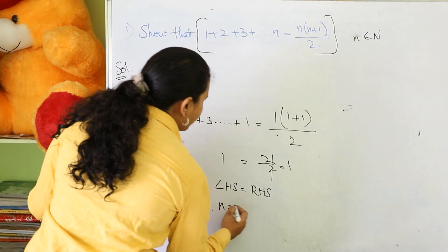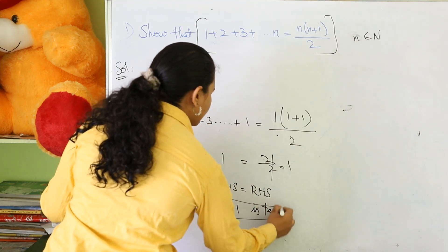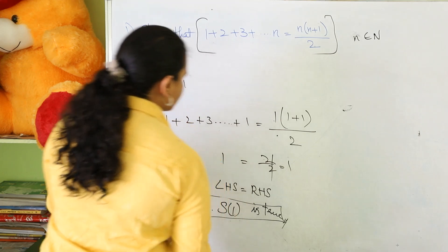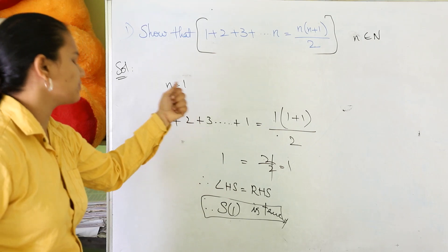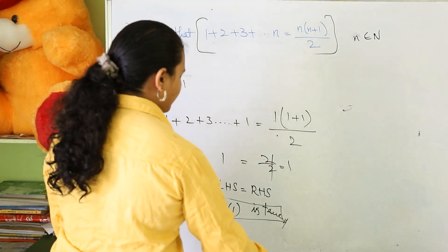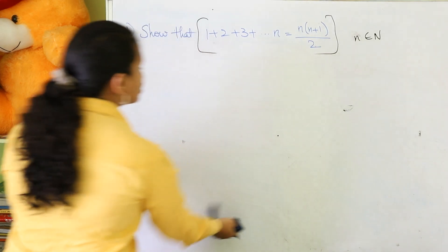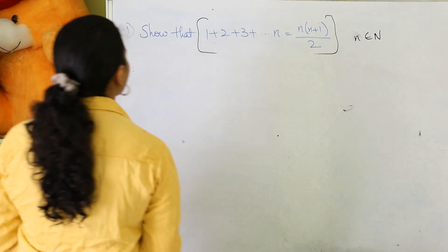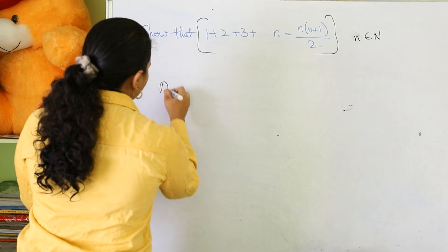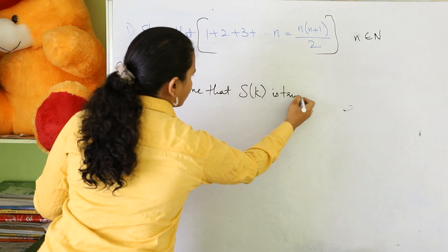Therefore, n equal to 1 is true. I can say that S of 1 is true. Now let's go for the second case, which will be S of K. In the second case, what you do is you assume that S of K is true.